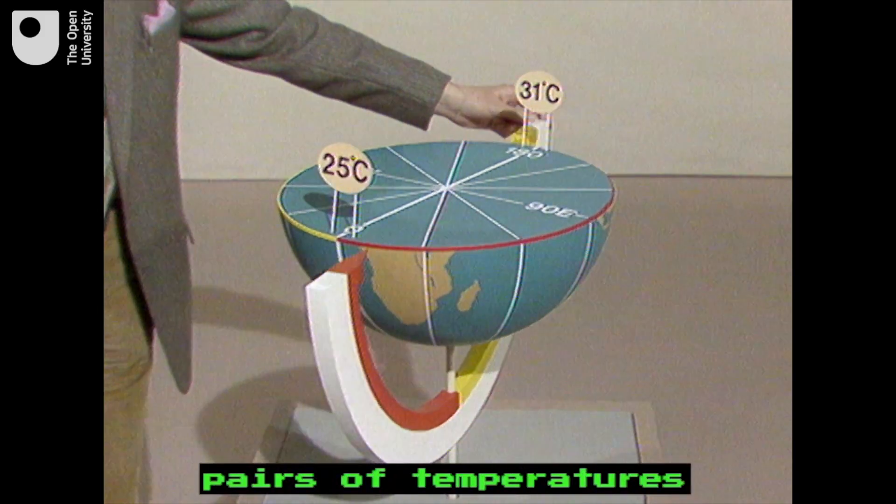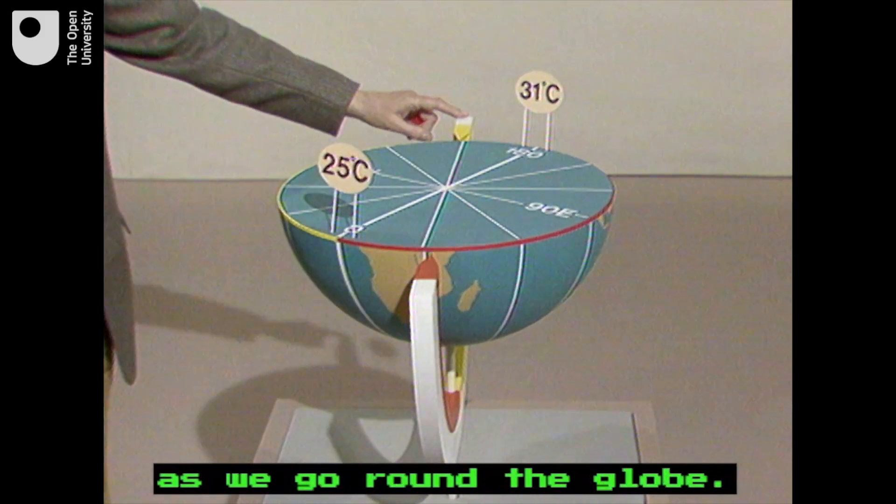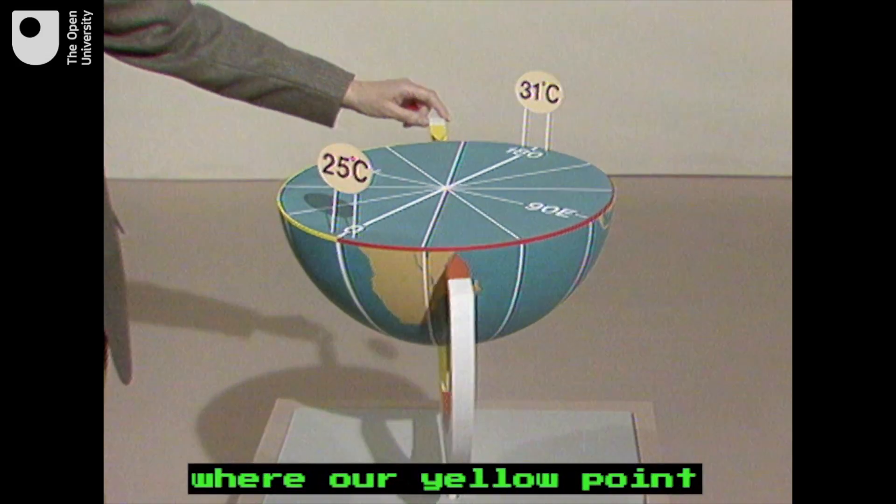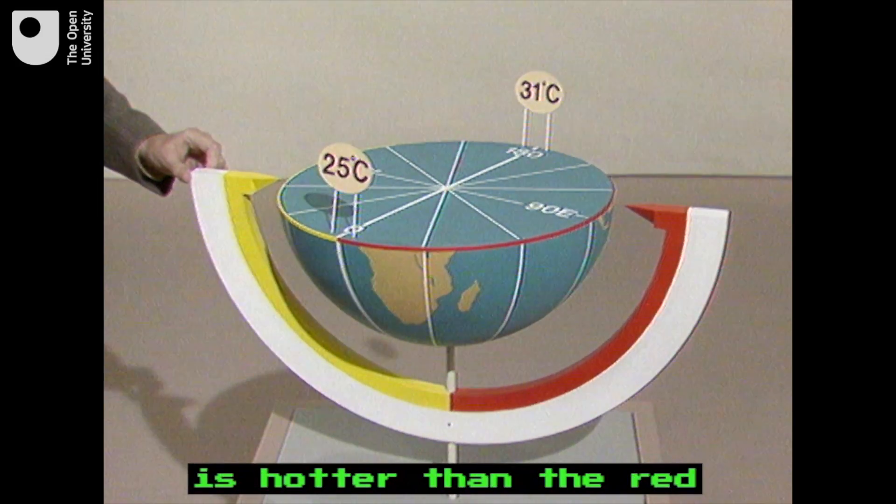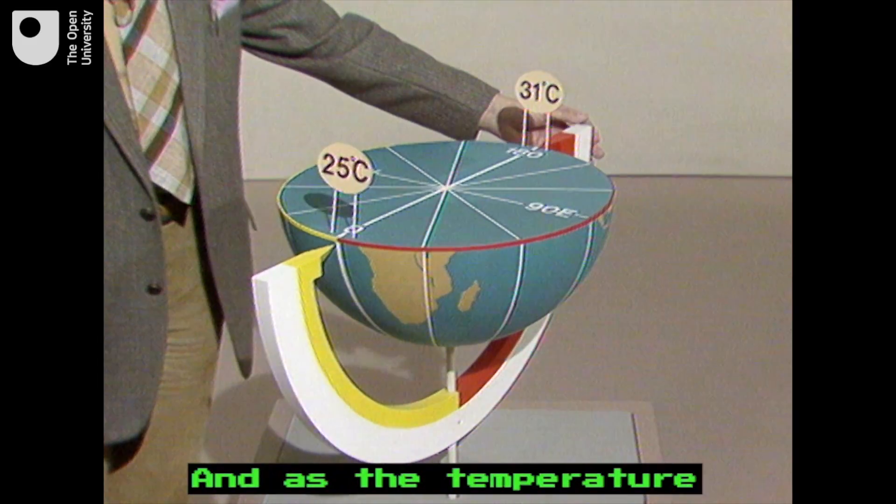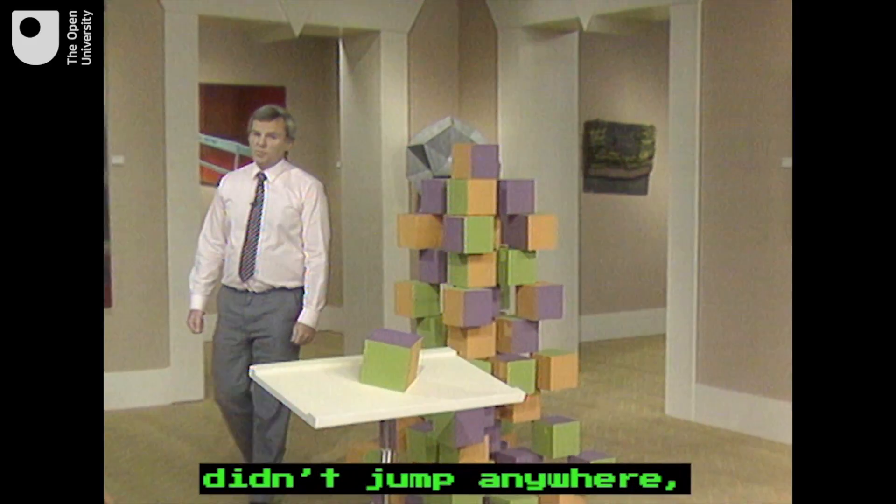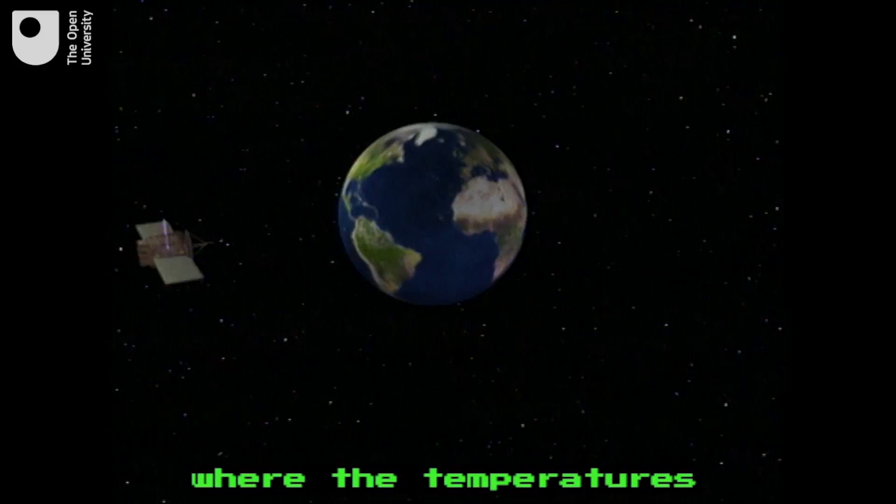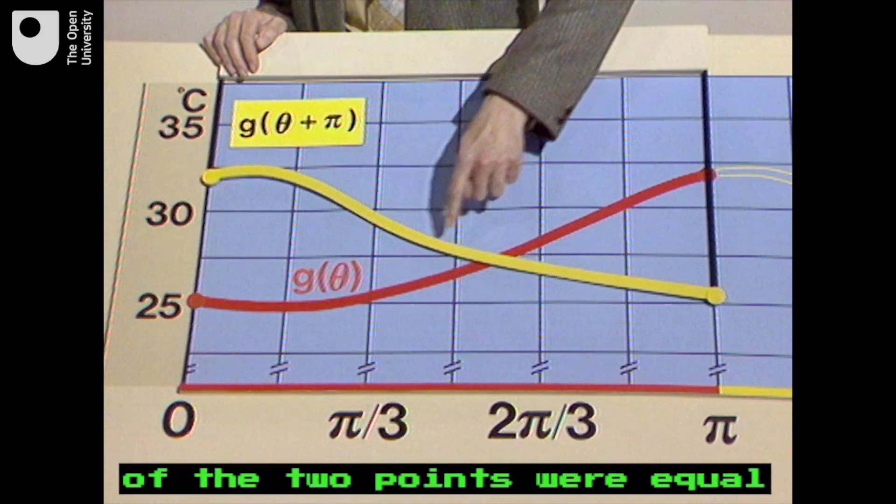Now we consider pairs of temperatures as we go around the globe. We pass from a situation where our yellow point is hotter than the red to one where the red point is hotter than the yellow. And as the temperature didn't jump anywhere, we'll have passed a point where the temperatures of the two points were equal.